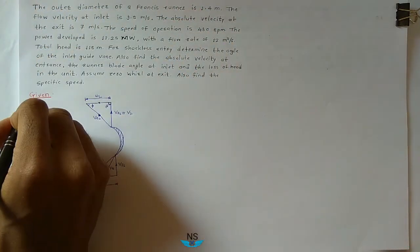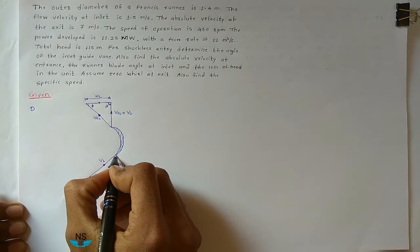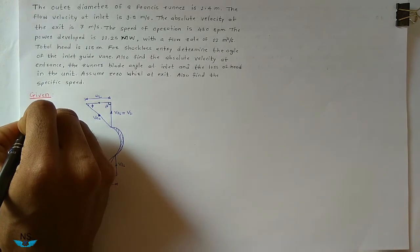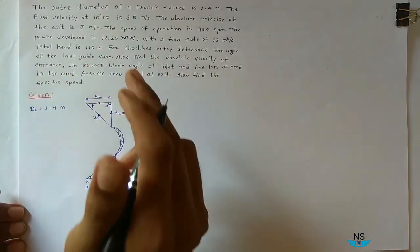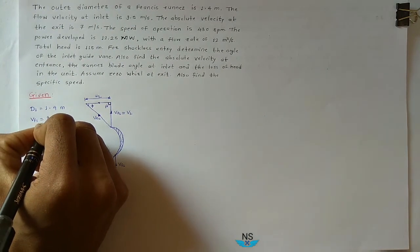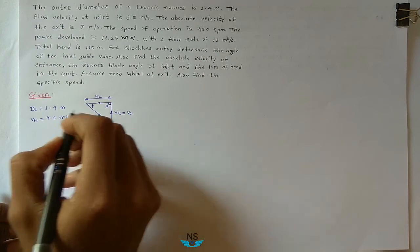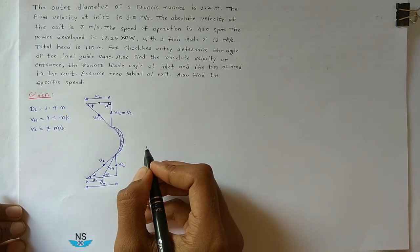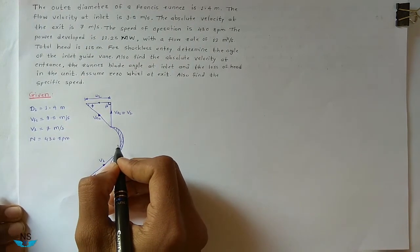What is given? The Outer Diameter means Diameter at Inlet — the Outer Side of the Runner — so D1 is given as 1.4 meter. The Flow Velocity at Inlet, Vf1, is given as 9.5 meter per second. The Absolute Velocity at Exit, V2 (which equals Vf2), is given as 7 meter per second. The Speed of Runner is 430 RPM.